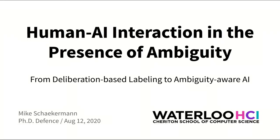My name is Mike Schaeckermann and today I'll be presenting my PhD research on the question of how humans and AI can be effective partners in the presence of ambiguity, which is defined as the quality of being open to more than one interpretation. Ambiguity permeates the way we perceive and interpret information and it affects how we make decisions.